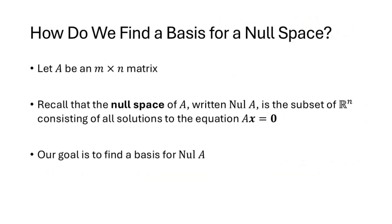Now in general we're going to be interested in finding a basis for both the null space and the column space of a matrix. We talked about null space back in Lecture 28, and column space in Lecture 29. Focusing on null space first: if A is an m by n matrix, the null space of A is the set of all vectors for which Ax = 0. We need a linearly independent spanning set. Let's start by finding a spanning set and see how to make it linearly independent.